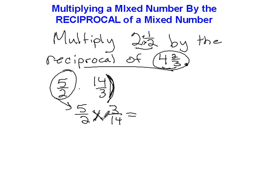Some of you are writing two fractions with no symbol in between — that makes absolutely no sense. Five times three is fifteen, two times four is twenty-eight. That's simplified — there's no number we can divide twenty-eight and fifteen by, so that's our final answer.